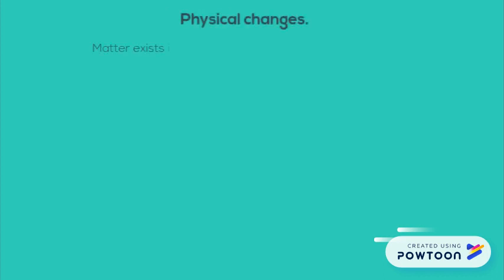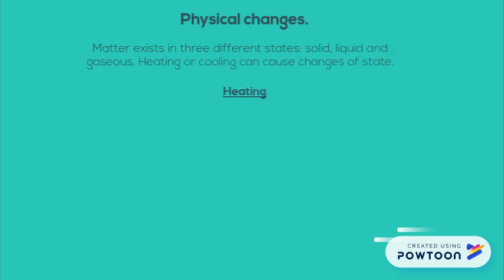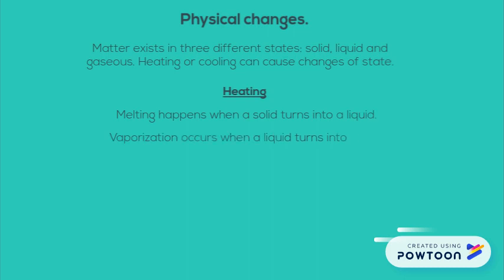Physical changes. Matter exists in three different states: solid, liquid, and gas. Heating or cooling can cause changes of state. When heating: melting happens when a solid turns into a liquid; vaporization occurs when a liquid turns into a gas — evaporation or boiling.